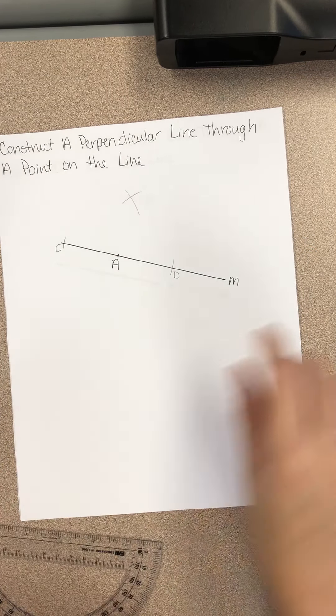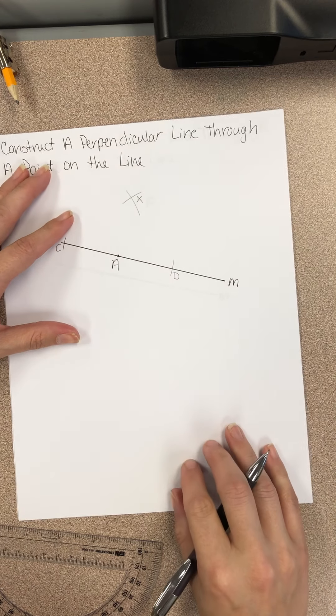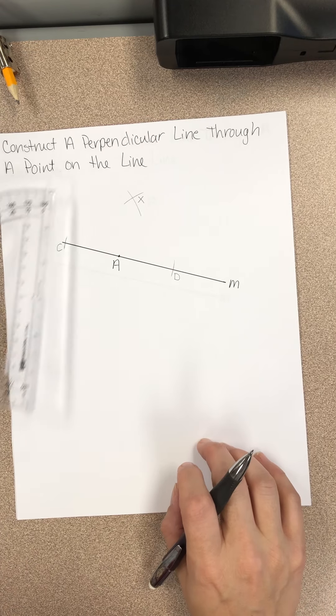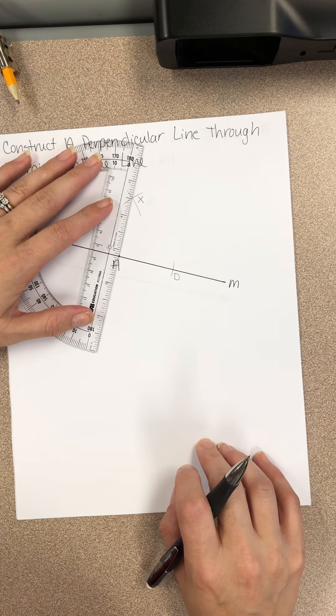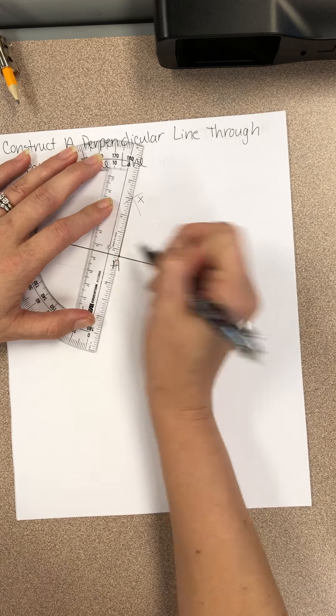Where they cross, we're going to label that point X. Then you use a straightedge and connect point A to X, like that.